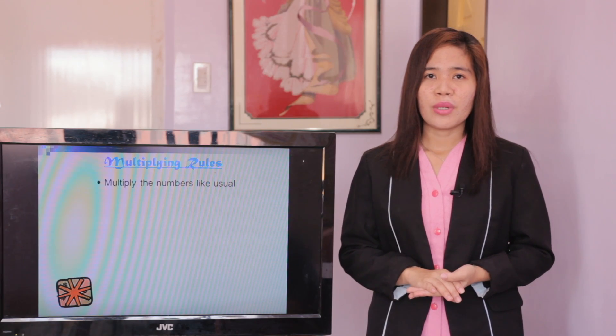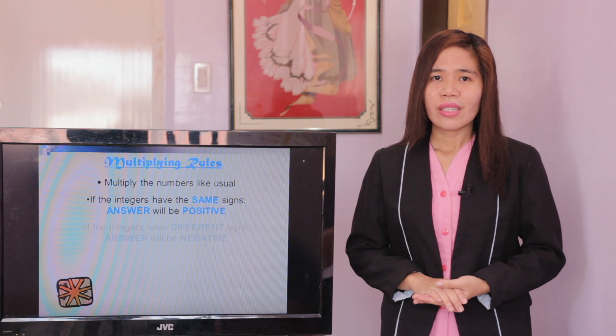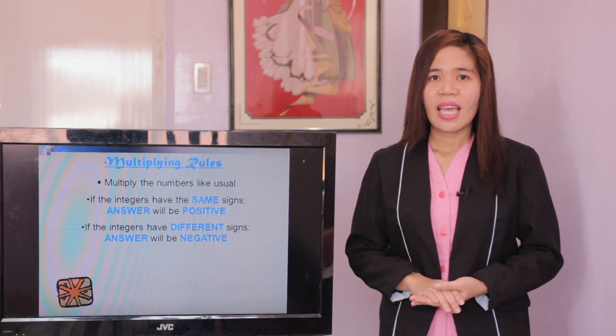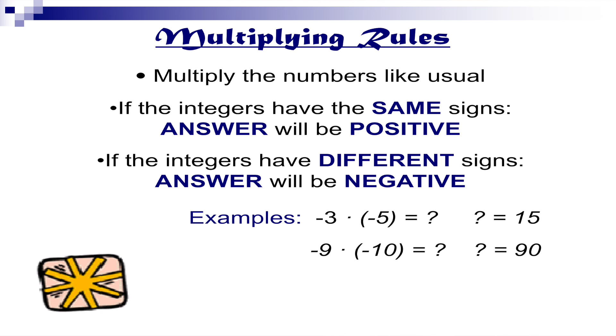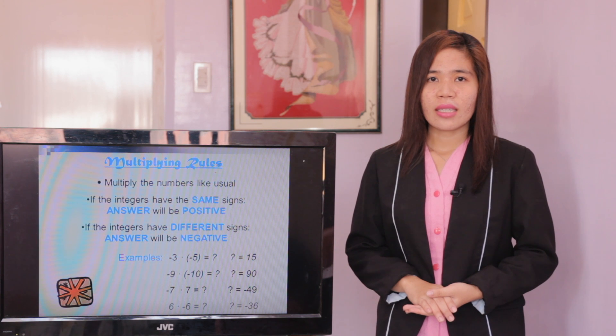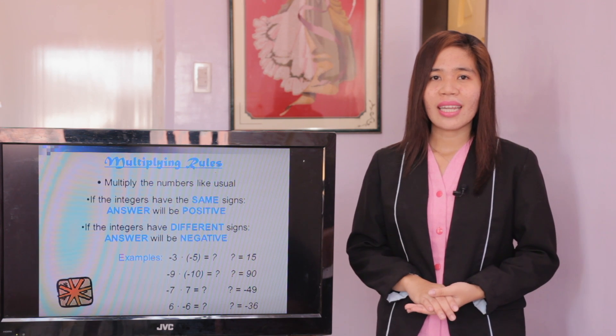The third operation is multiplication. Multiplying rules: first, multiply the numbers like usual. Second, if the integers have the same signs, the answer will be positive. Third, if the integers have different signs, the answer will be negative. Examples: negative 3 times negative 5 equals positive 15. Negative 9 times negative 10 equals positive 90. Negative 7 times positive 7 equals negative 49. Positive 6 times negative 6 equals negative 36.